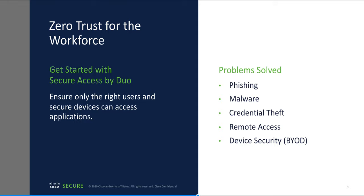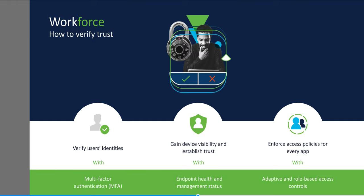Duo's multi-factor authentication, or MFA, can help secure your workforce by verifying user identities and establishing device trust before granting access to applications. It's this layer of security that protects you against phishing attacks and compromised credentials, while providing visibility and security for BYOD. Duo prevents breaches caused by stolen passwords by verifying identities using multi-factor authentication, adding another layer of security to ensure your users are who they say they are before they're granted access.